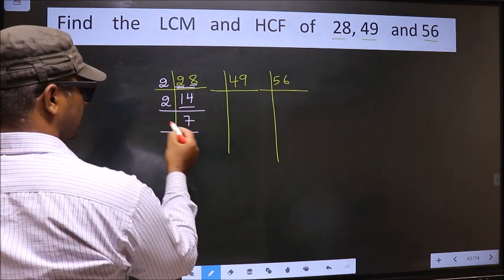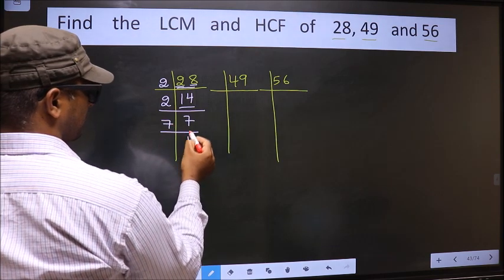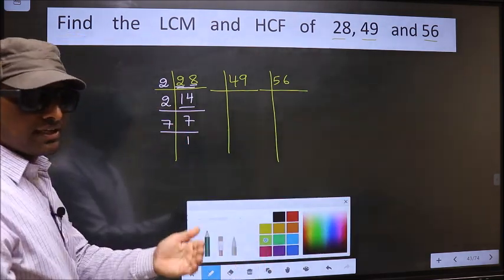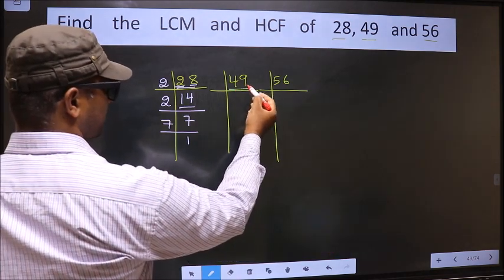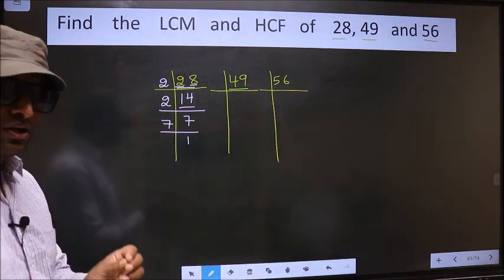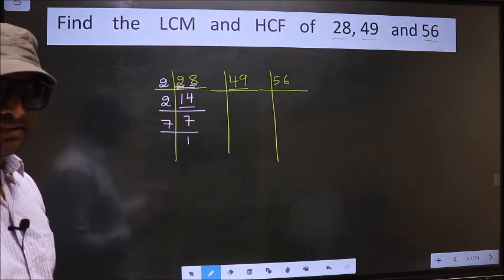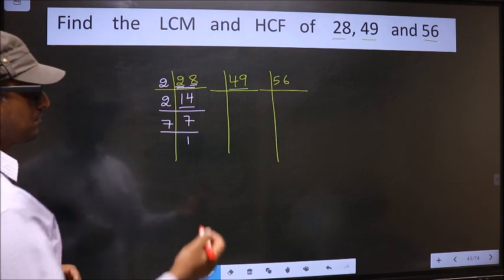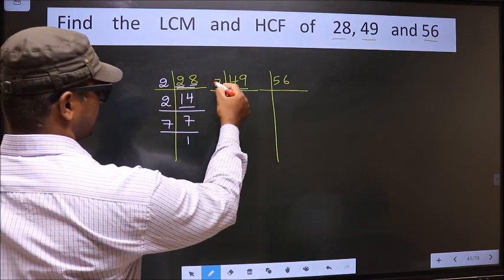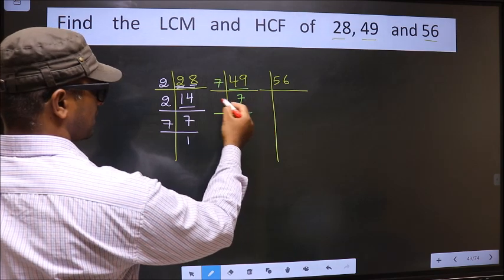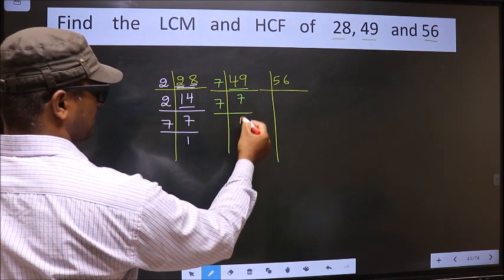Now we have 7, 7 is the prime number, so 7 times 1 is 7. Now the other number, 49. Always remember, 7 squared is 49, 7 into 7 is 49. So we take 7 times 7 is 49. Now we have 7, 7 is the prime number, so 7 times 1 is 7.